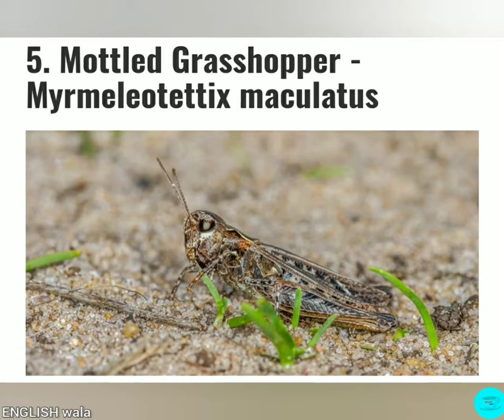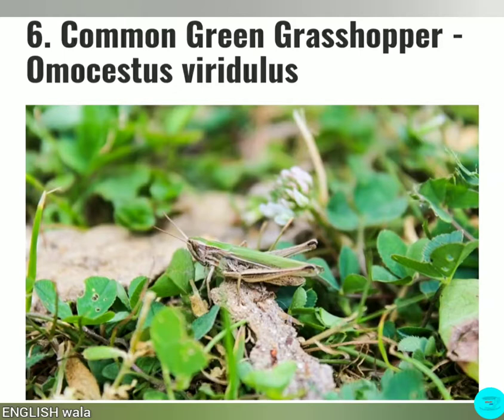Number 5: Mottled Grasshopper. These small grasshoppers are most commonly found in dry and rocky areas. They mostly like sunny conditions but exist in a variety of climates across the United Kingdom, Russia, Greece and Spain. They are also found in North Africa. Mottled Grasshopper has antennae on its head. Their main diet is grass and weeds.